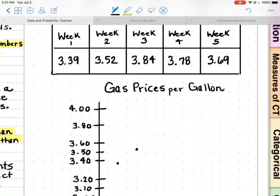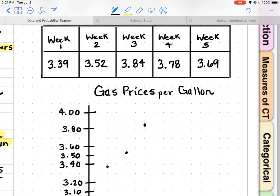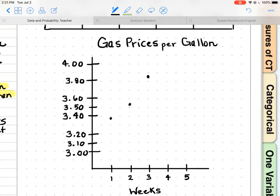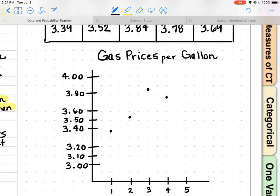Week three is $3.84, so I'm going to go to $3.80 and almost halfway. Week four is $3.78, so I'm going to go just under the $3.80. It's not quite to $3.80. And then $3.69 is almost here at $3.70, so we're just going to go a hair under $3.70.